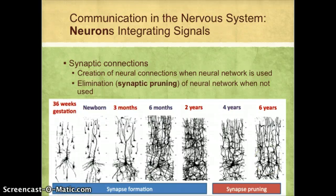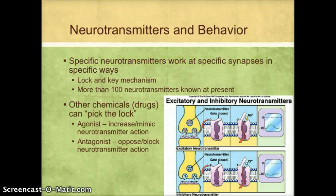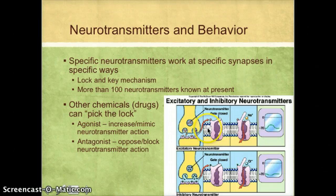Now we need to move on to our last topic regarding communication in the nervous system — neurotransmitters. Not all neurotransmitters are created equal. There are more than a hundred different neurotransmitters, and each one works at specific synapses and in a specific way. They all work using a lock and key mechanism, where the neurotransmitters get released and bind to the surface of the receptor site.